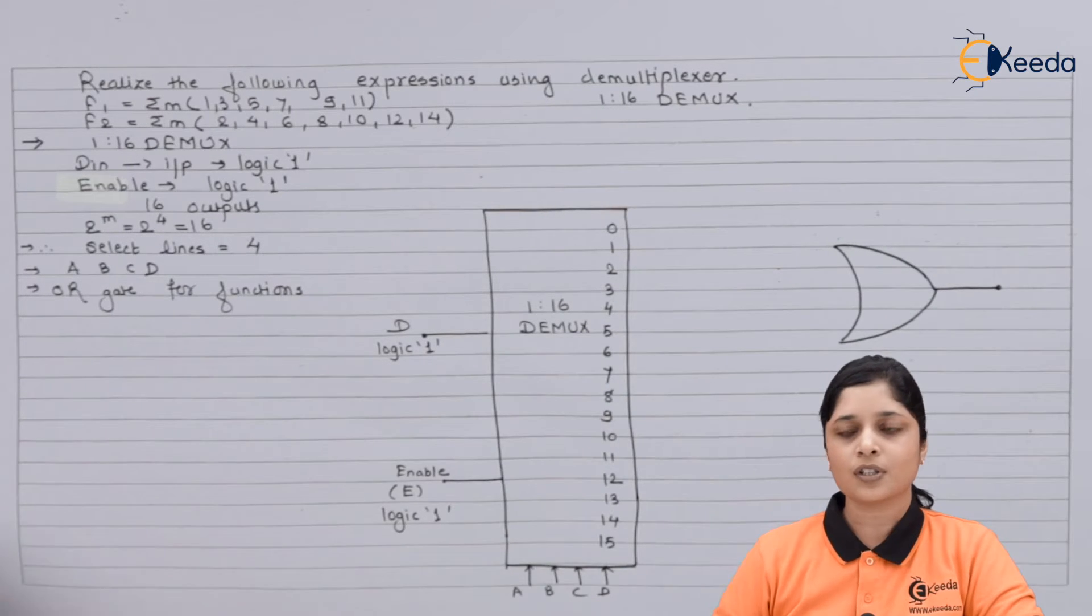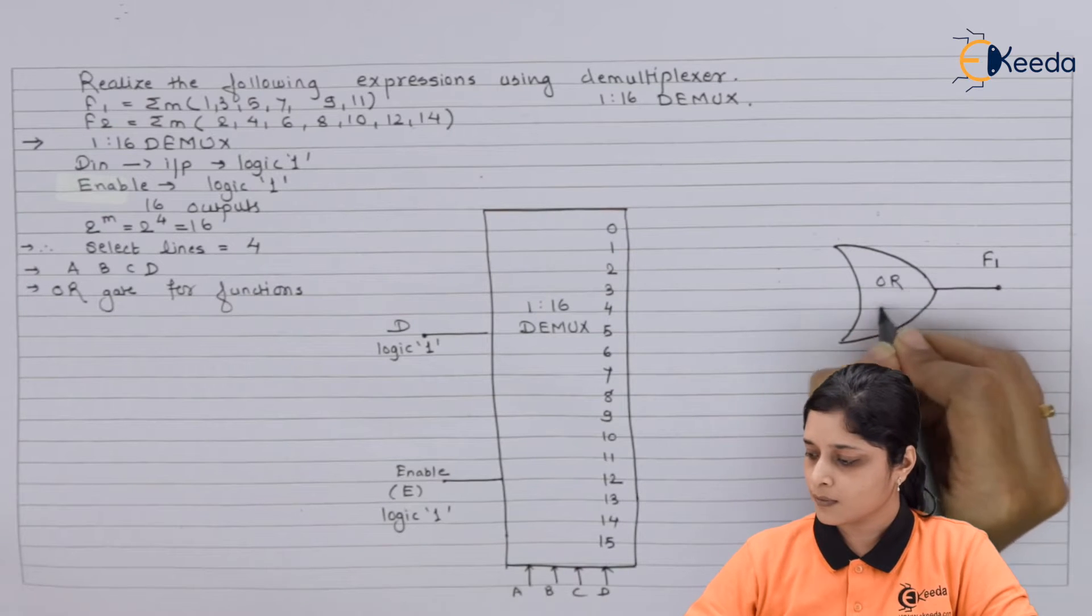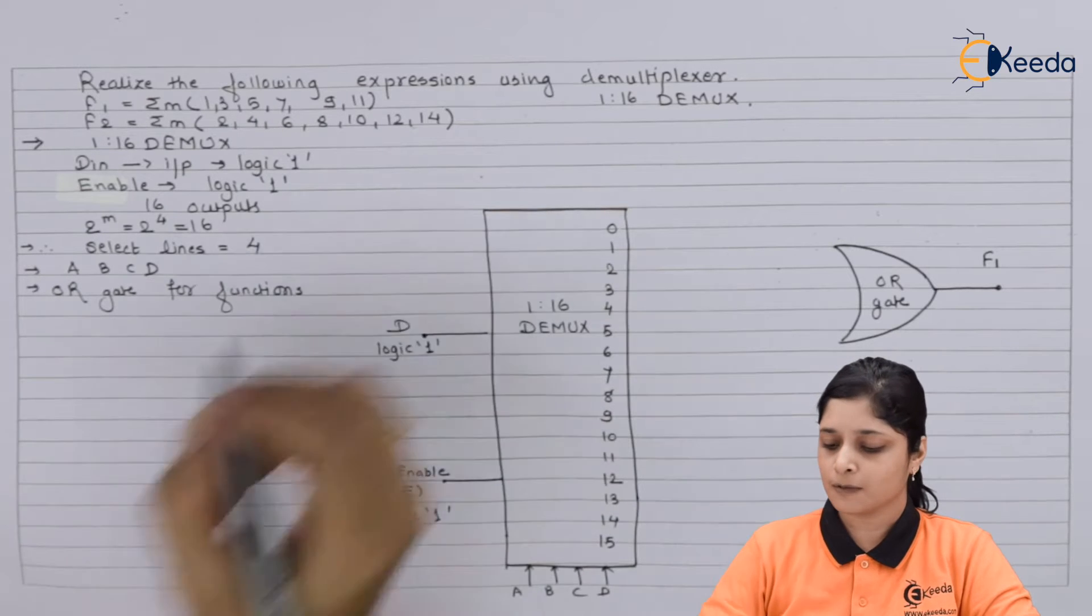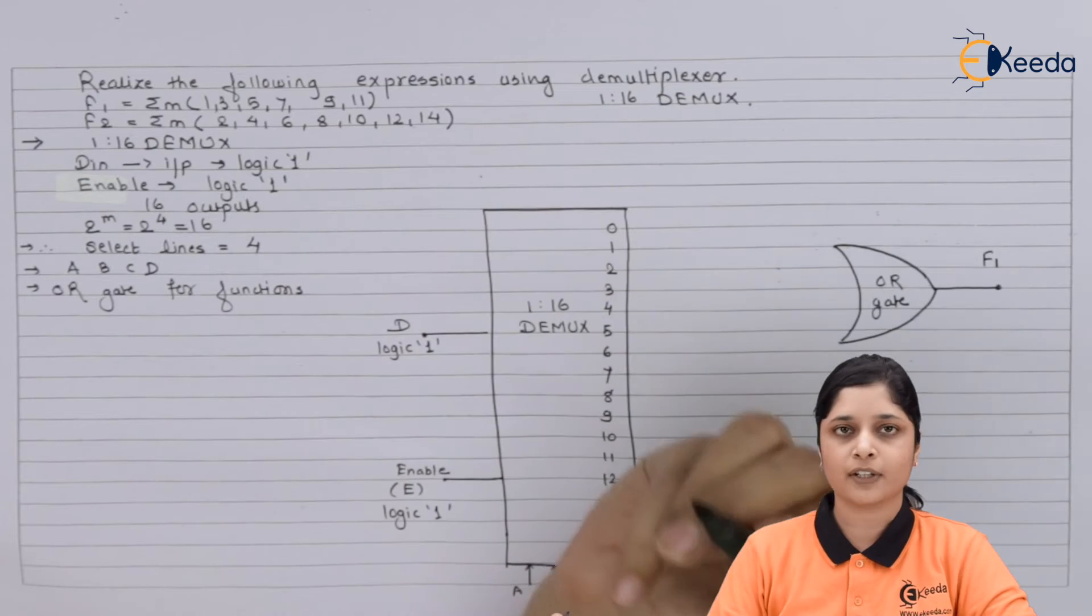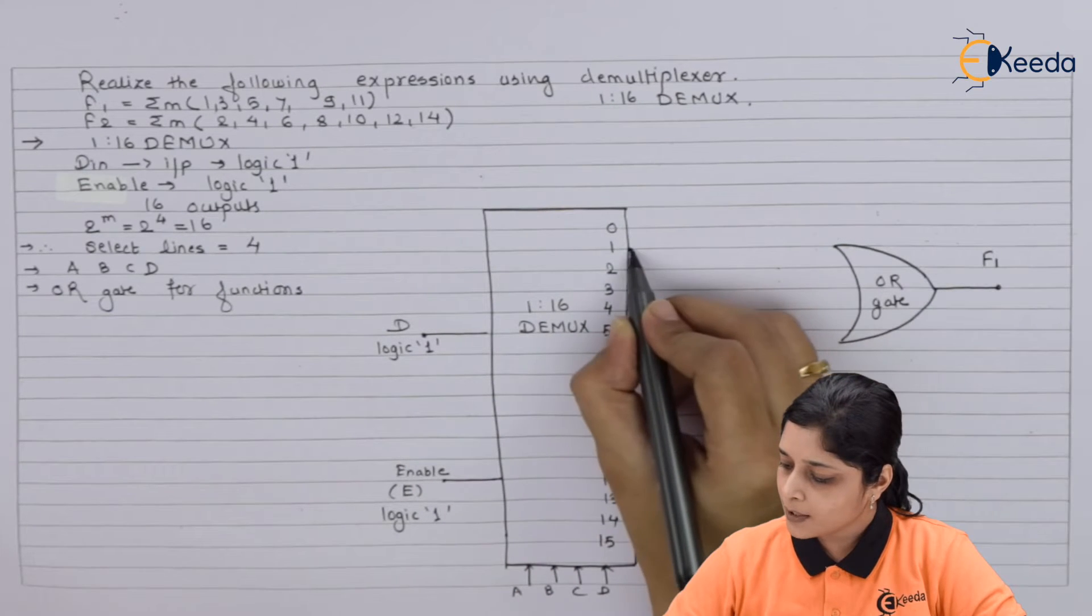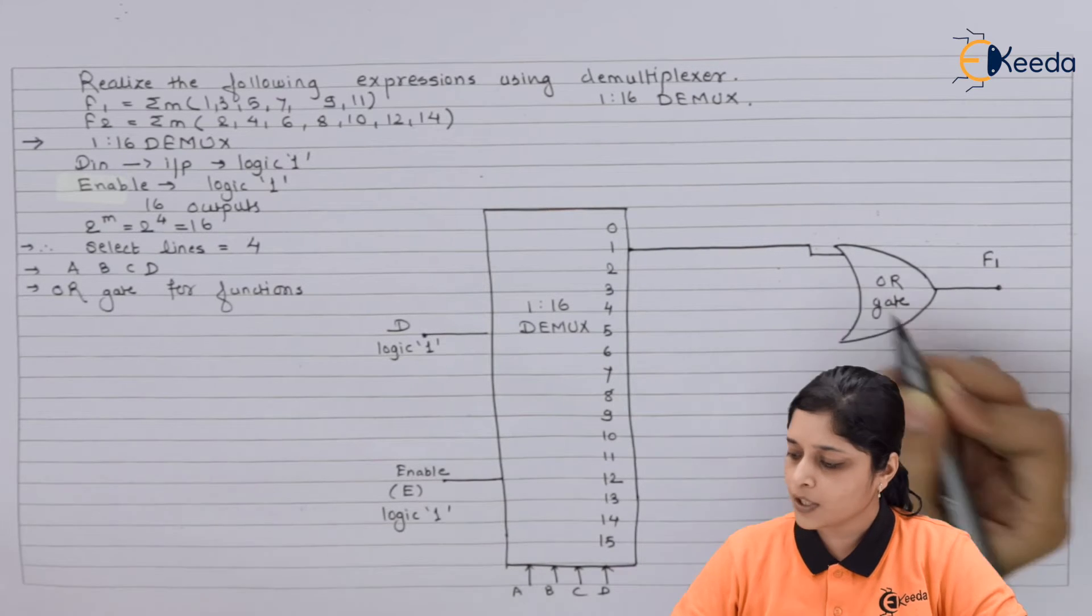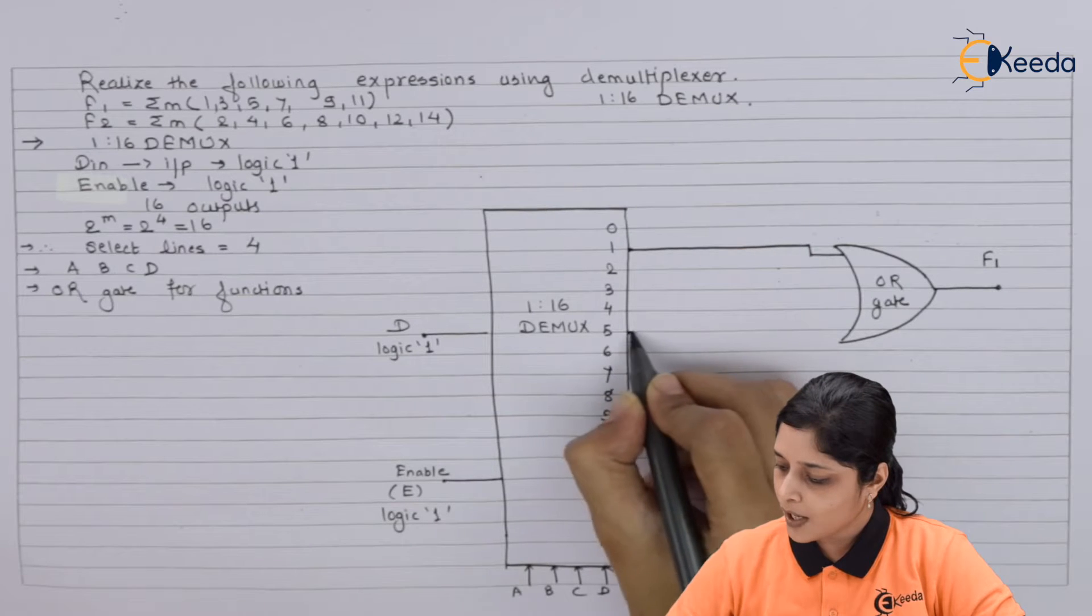We will focus on the first function for OR gate. The required minterms are what? 1, 3, 5, 7, 9, and 11. So one by one we are going to collect the term and give input to OR gate. So 1, after that we have 3. Then 5 over here.